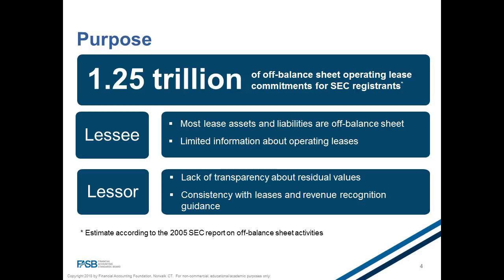A good way to get a sense of the impact to reported assets and liabilities might be to use the currently provided long-term obligations table where companies were previously disclosing future lease payments. Companies should be providing disclosures about the estimated impact of the new standard in advance of first quarter 2019 reporting. However, companies will likely be re-evaluating many arrangements to see if they contain a lease — for example, service contracts that actually contain a lease but were previously not identified — which could result in different amounts than what's currently in disclosures.